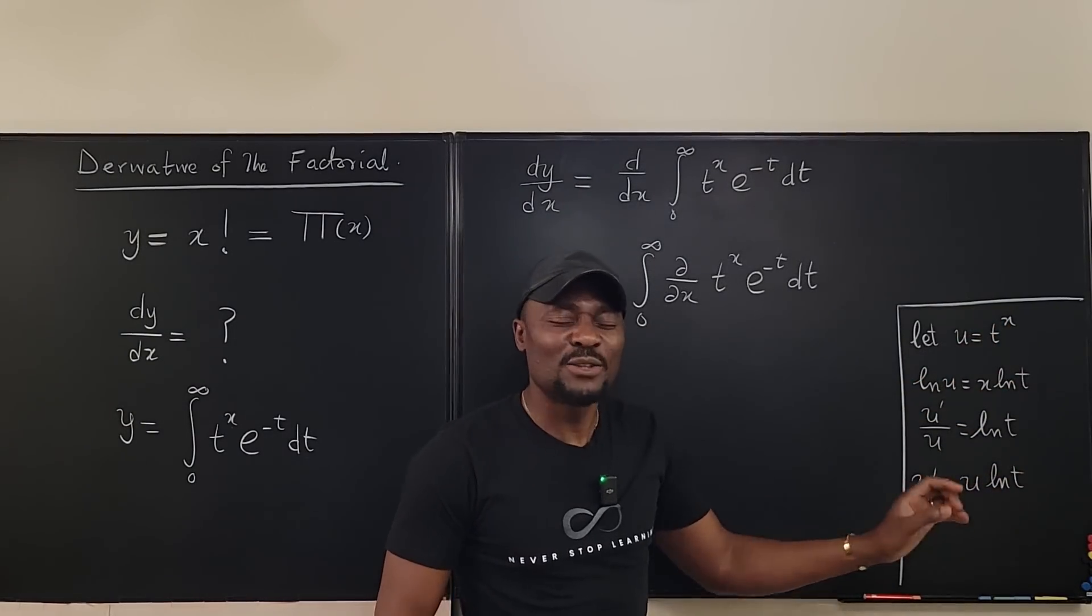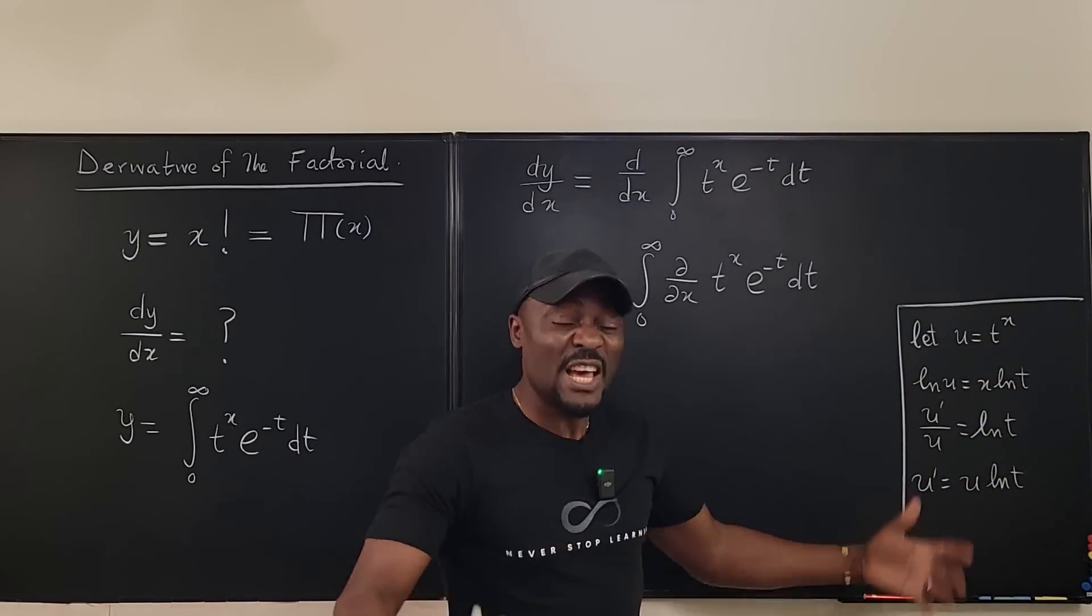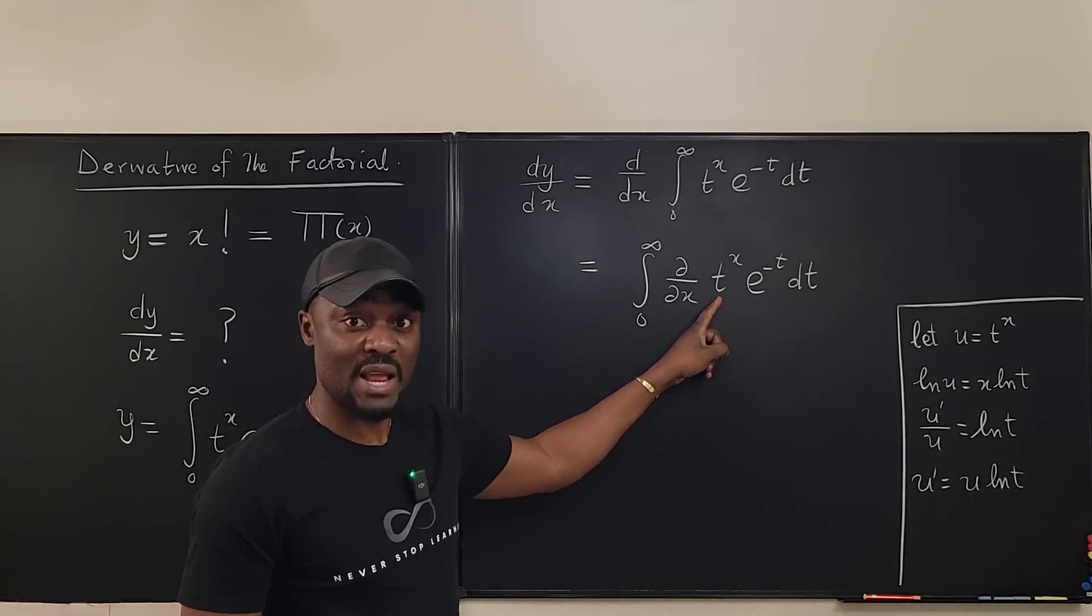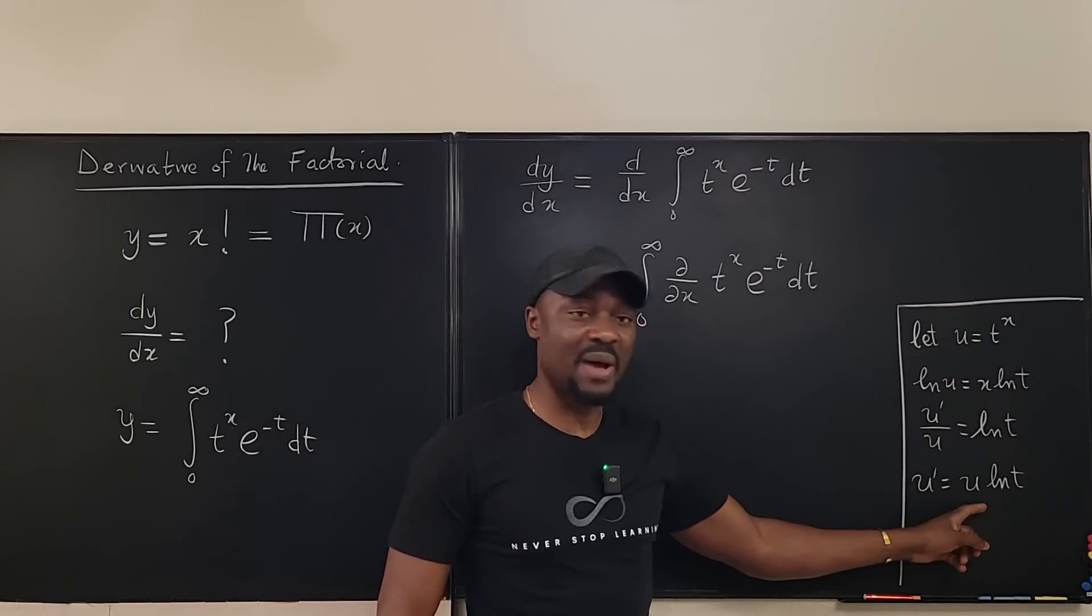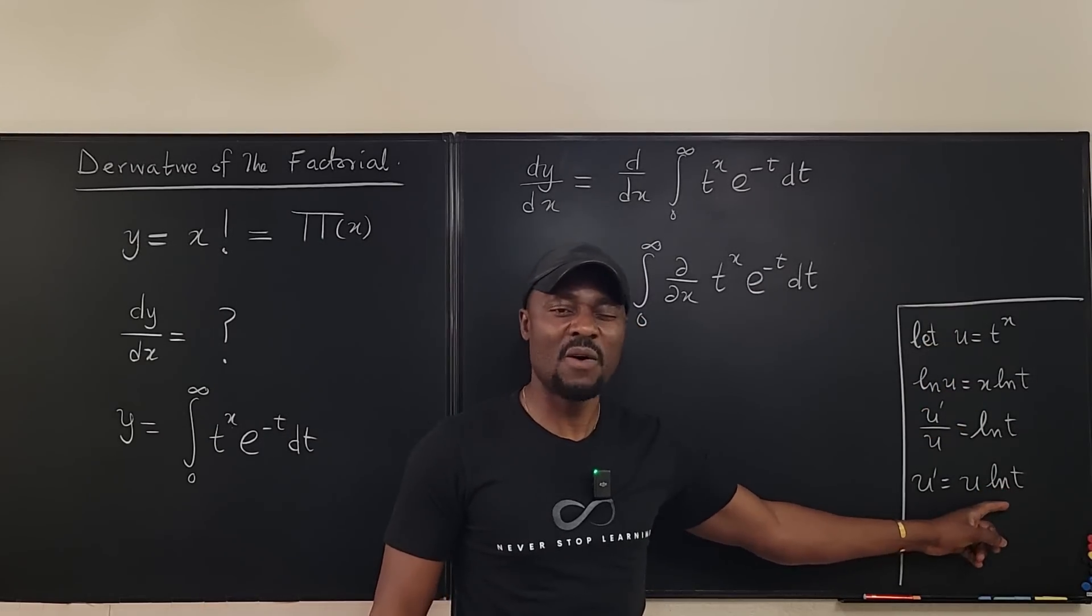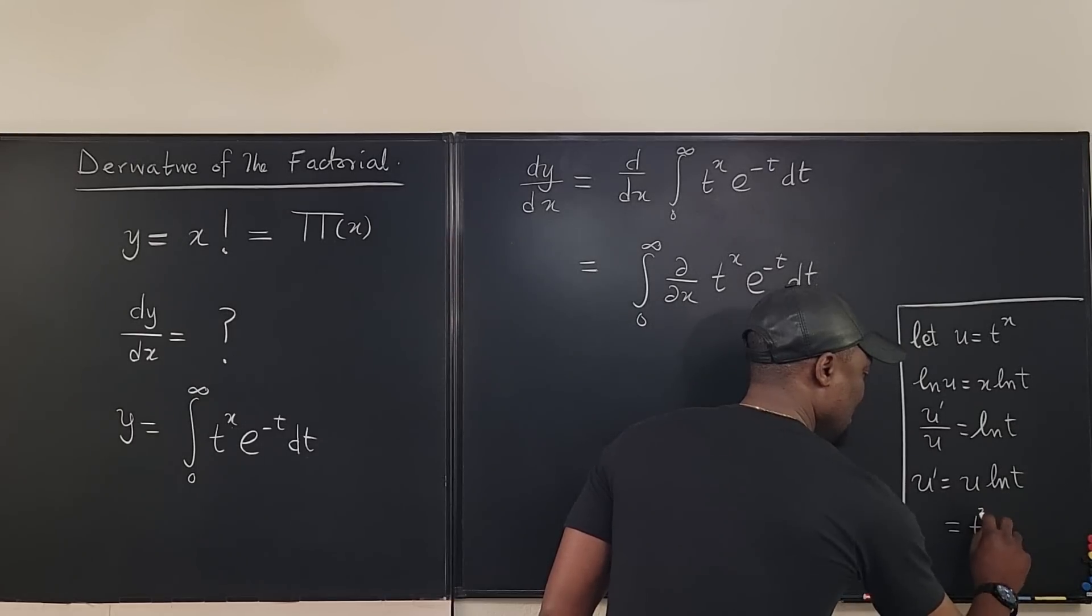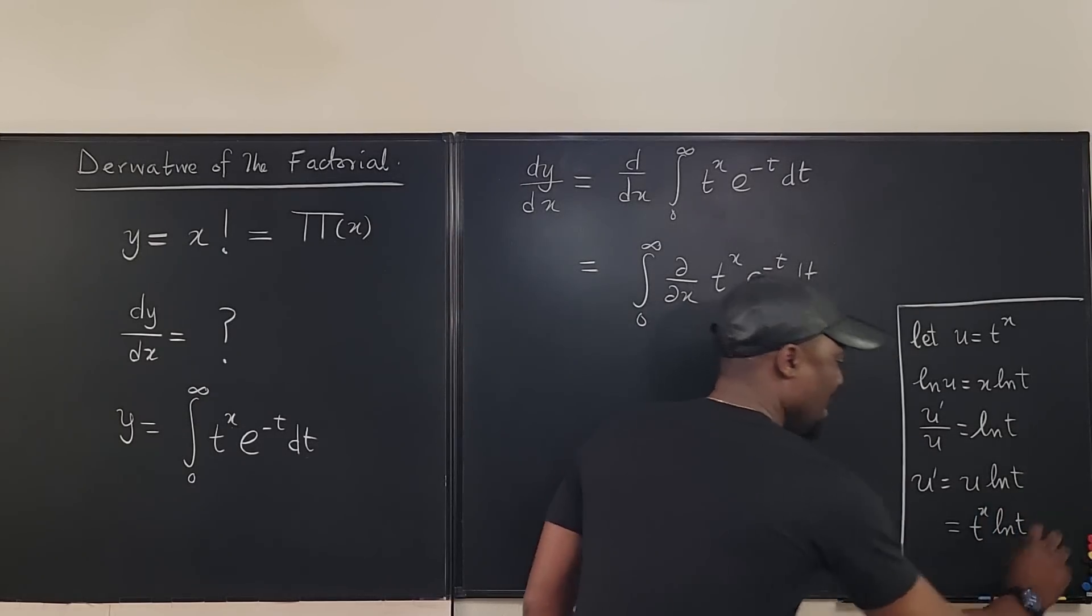So now I'm showing you, this is how, let's say you've forgotten what the derivative of an exponential function is. This is the path you're going to take and you can say, okay, now I remember. So this is the same thing as t to the x ln t.